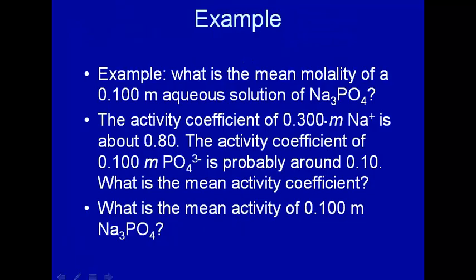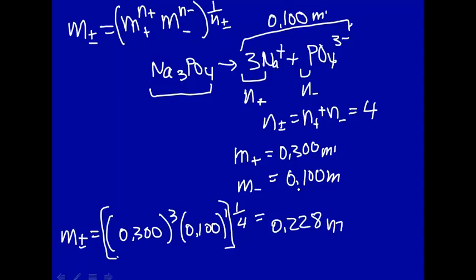So this is, if you want, an average concentration of ions, considering both the sodium ions and the phosphate ions, this is molal. The activity coefficient, we're going to estimate these, of 0.3 molal solution of sodium is about 0.8. The activity coefficient of PO4 is around 0.1. So what's the mean activity coefficient?